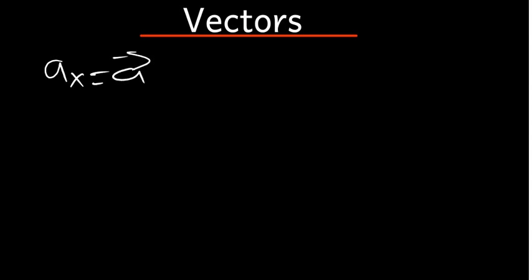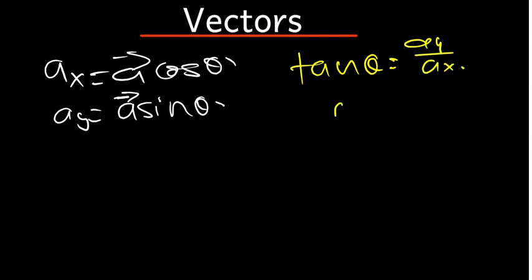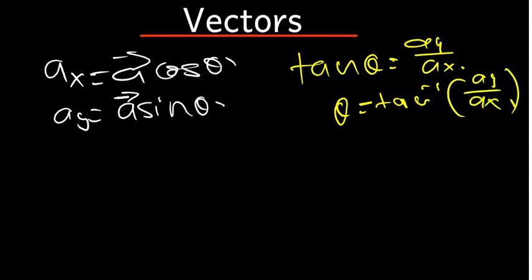Let's continue. We are talking about vectors. In the previous video we came up with the formulas for the x and y components. We said that if we want to find the x component, it's going to be vector A cosine theta, and the y component is going to be A sine theta. To find the direction, which is theta, tan theta equals ay divided by ax, so theta equals tan inverse of ay over ax. This is the basic idea which we have to understand under vectors.